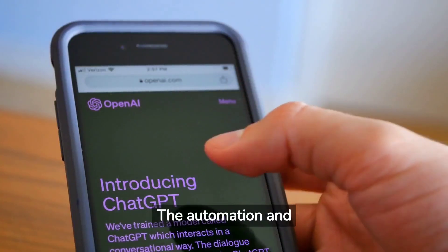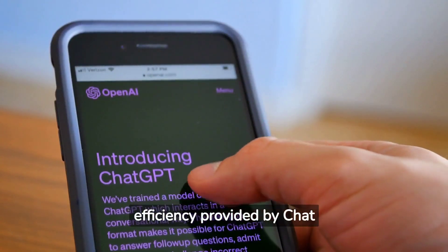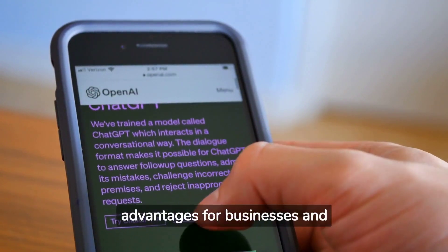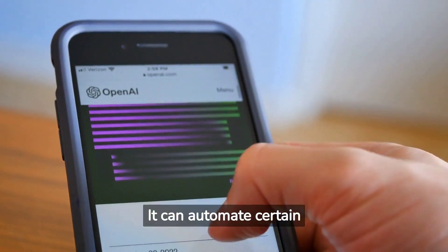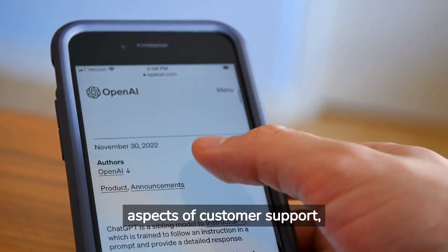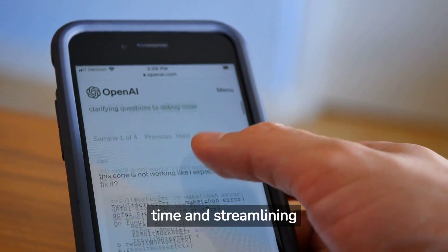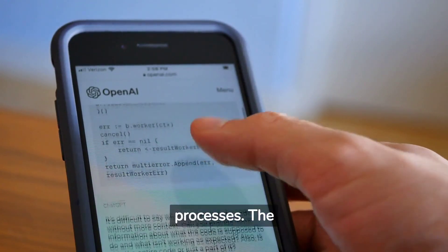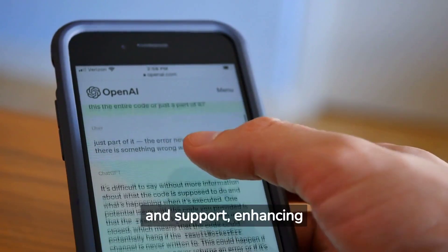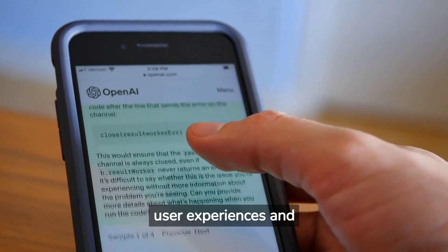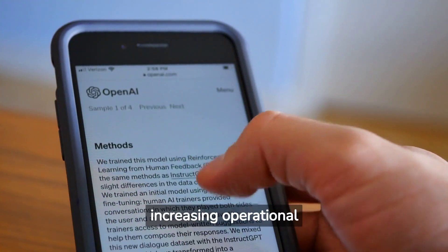The automation and efficiency provided by ChatGPT are significant advantages for businesses and organizations. It can automate certain aspects of customer support, chatbots, and virtual assistance, saving time and streamlining processes. The model offers instant responses and support, enhancing user experiences and increasing operational efficiency.